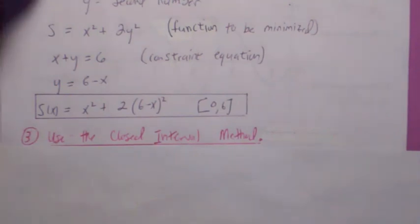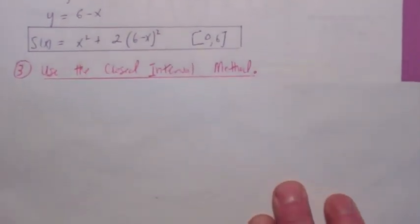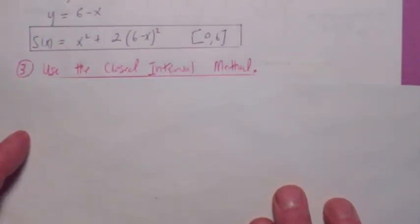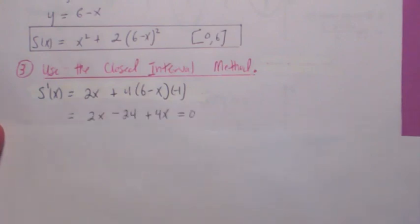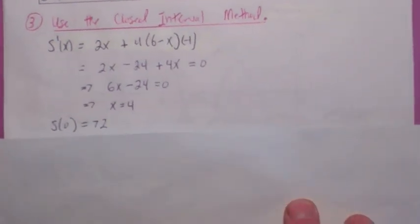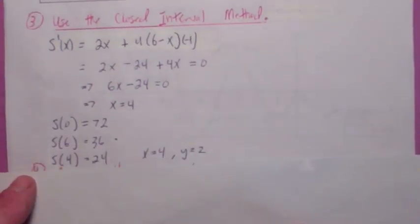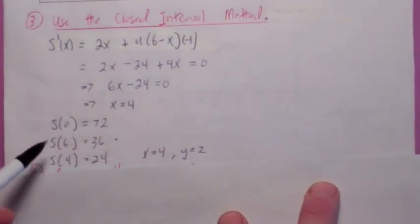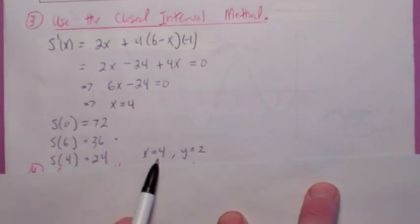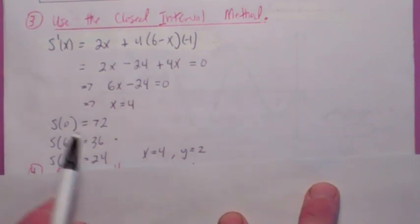The way you finish this problem is to use the closed interval method from section 4.1. Take the derivative, set it equal to zero, get your critical number x = 4. Then compare s at the end points with s at your critical number. Your absolute minimum is at 4. And if x is 4, then y is 6 minus 4, which is 2.